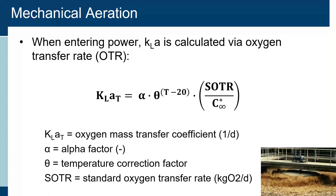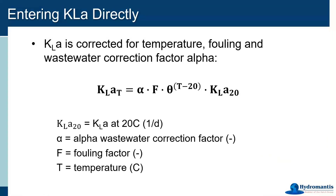The last option is just entering the KLA directly, which is very much more so for doing theoretical calculations. We're going to ask you for the KLA at 20 degrees Celsius, and we're going to apply our correction factors — alpha, fouling, and temperature — and that will give us our field condition KLA. So basically, those are three different ways — three different methods to arrive at KLA — and that is what gets applied to our system.